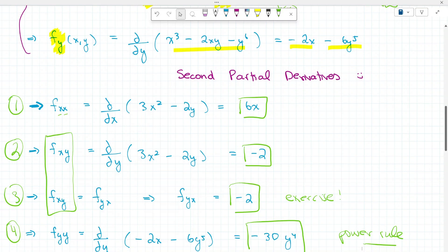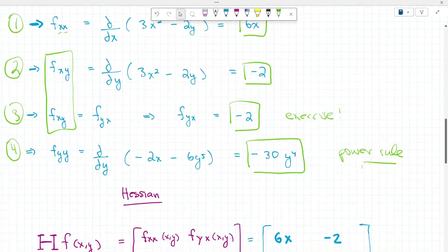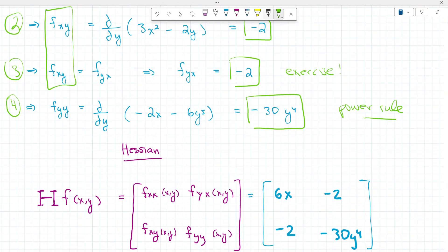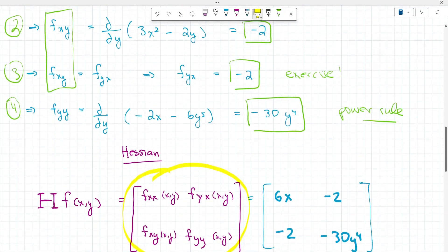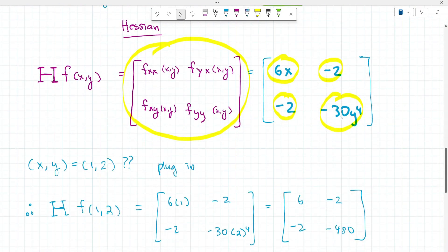Now that we have all these partial derivatives, in order to find the Hessian, we simply just have to collect them and put them in their respectable locations. I always recommend that you start off with a definition before you sub in any values. This ensures that you have the right placement for all your partial derivatives and reduces the chance that you're going to make an error when trying to put them in. So now we're going to collect them. We have our 6x, -2, -2, and -30y⁴. We're not quite done yet. The question asked us to evaluate the Hessian at a specific point, (1,2). Let's go ahead and do that.